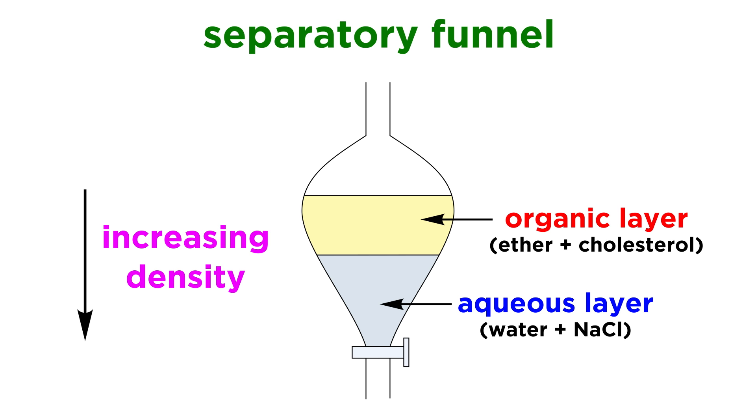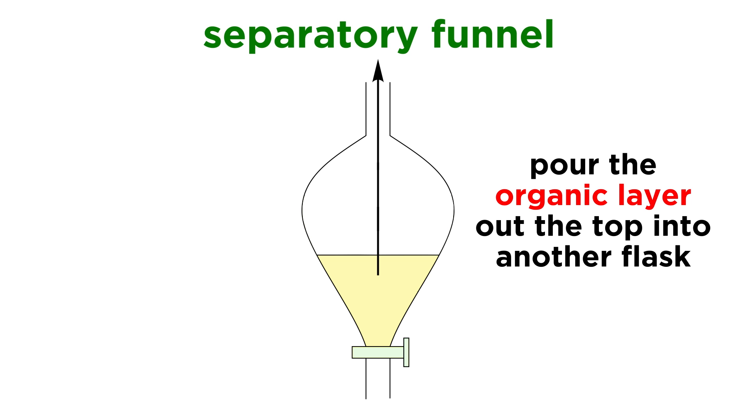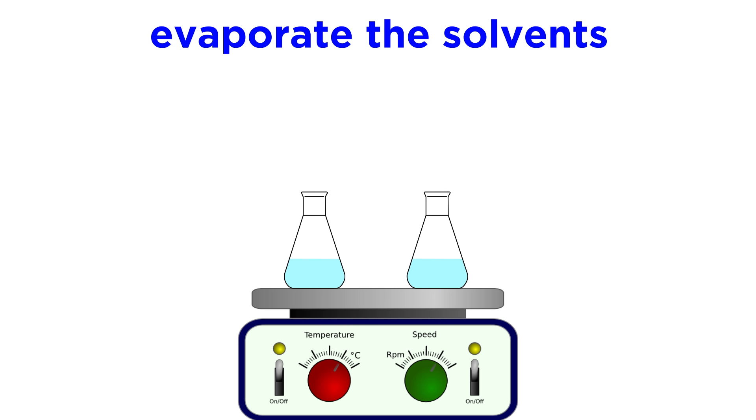So we just open up the funnel and drain the aqueous layer until we just barely get to the organic layer. And then we pour that out the top of the funnel into something else. Evaporate the solvents, and there you have your substances, nice and separated.